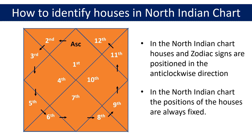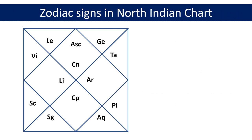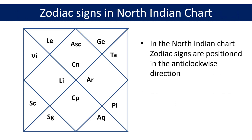The next thing you need to be aware of about the North Indian chart is that the positions of the zodiac signs or Rashis are not fixed. The North Indian chart on this screen shows the placement of zodiac signs or Rashis in the chart. As mentioned earlier, the zodiac signs or Rashis are positioned in the anti-clockwise direction as shown by the arrows.